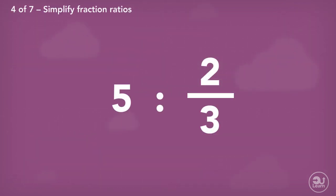A form of simplifying ratios can involve fractions. How could you simplify 5 to 2 out of 3? First, we turn both values in the ratio into fractions. The second value is already a fraction. What is the fraction of a whole number? Any number can be expressed as the number over 1, so 5 as a fraction is 5 over 1.